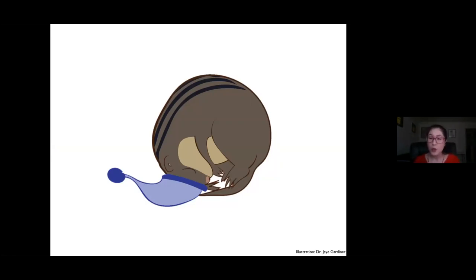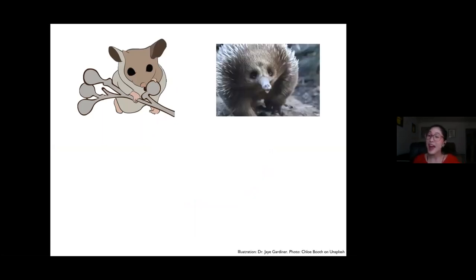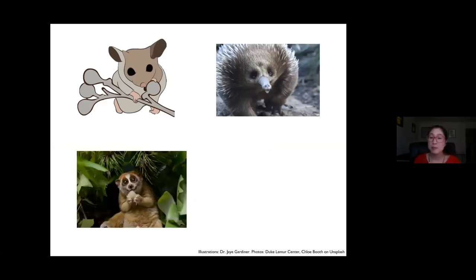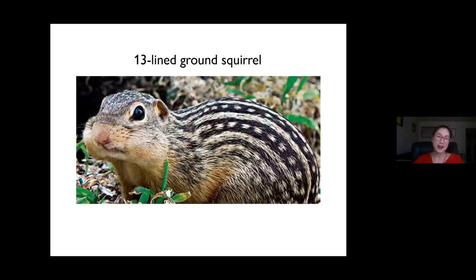And you can find hibernators widely distributed throughout mammals. There are pouch carrying mammals or marsupials that hibernate like this pygmy possum, and there are even egg-laying mammals like this echidna that hibernate. Within primates, we even have two species of primates that hibernate, which are the pygmy slow loris and the fat-tailed dwarf lemur. However, my hibernator of choice that I study is the thirteen-line ground squirrel.